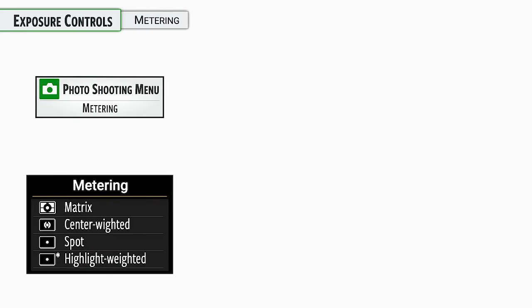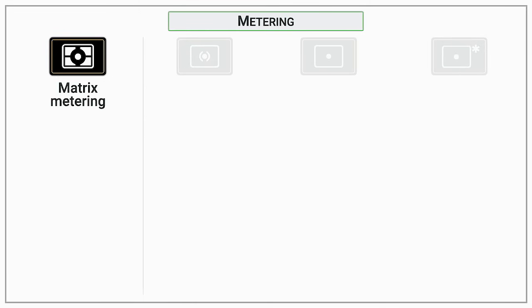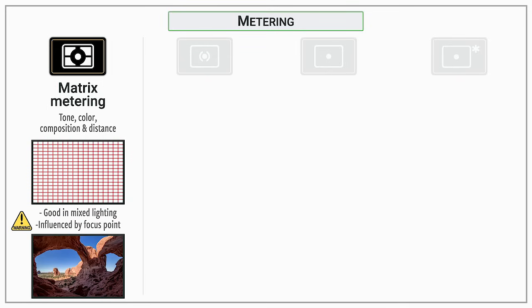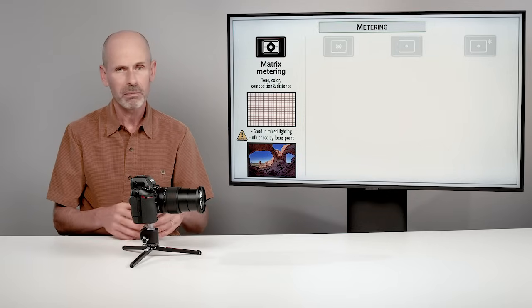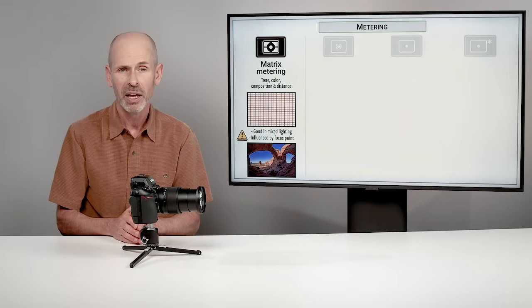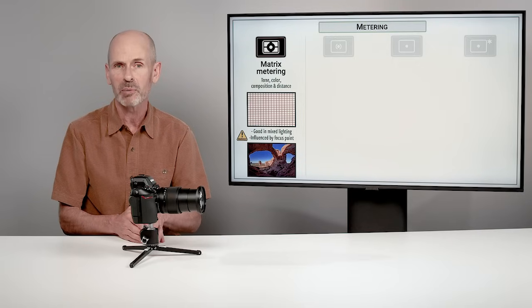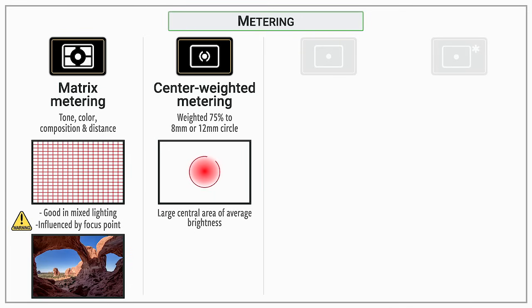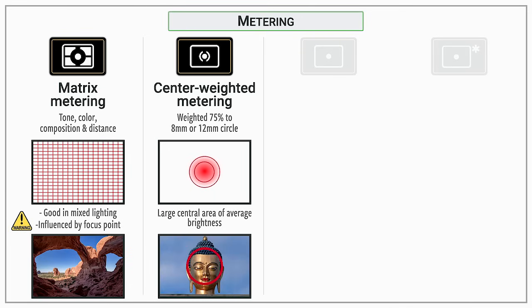The metering system determines what the camera considers the correct exposure. There are four options. Matrix metering is Nikon's most sophisticated system, using tone, color, composition, and subject distance to determine brightness values. It's extremely good in mixed lighting and most situations — most people can leave their camera on matrix metering all the time.